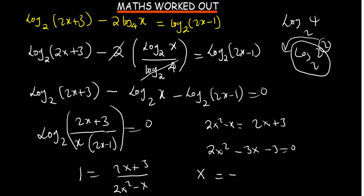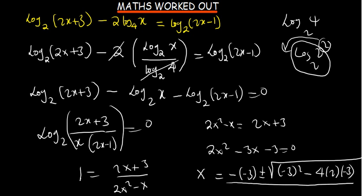X is equal to negative negative 3 plus or minus square root of negative 3 squared minus 4AC over 2A. So all to do is to simplify this one and then we find the value for x.